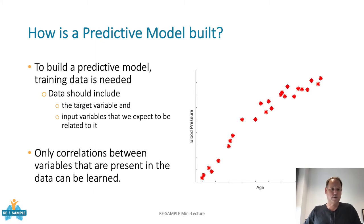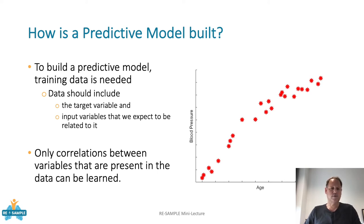So how is the predictive model built? First you need the training data. The training data must of course include the target variables of interest — here on the right we have a simple example where the target variable could be blood pressure — and of course the training data must include the input variables that you expect to be related to that target variable. The predictive model can only detect correlations of variables that are given in the training data, so if a target variable is not in the dataset it cannot be predicted.